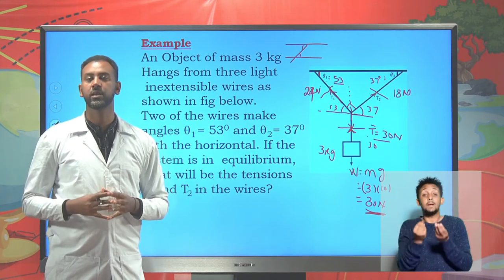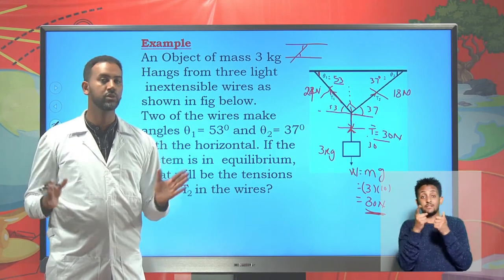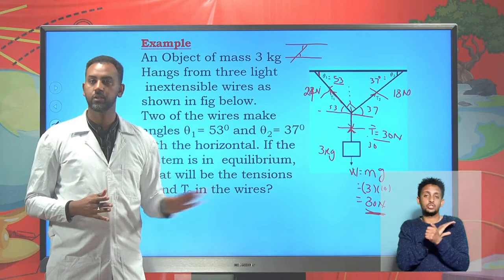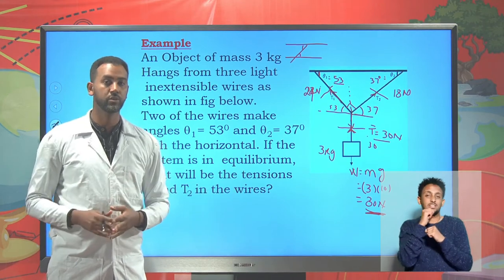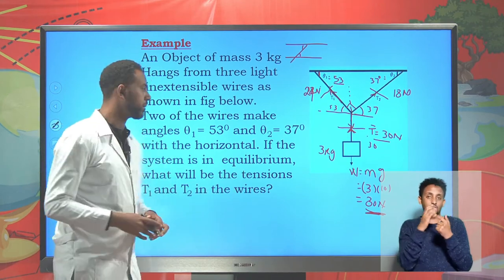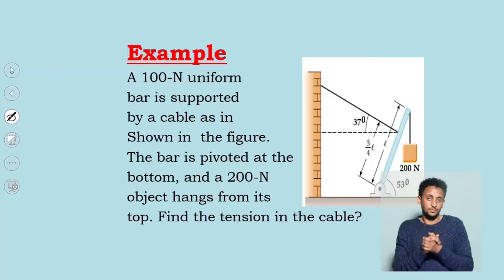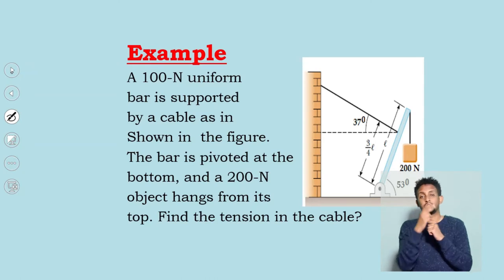This is how we solve a mass-string system. For a mass-string system, the first condition alone is sufficient. We have not yet needed the second condition of equilibrium. Now let's proceed to see the next problem.